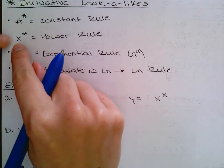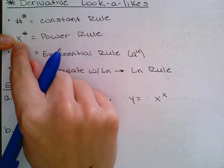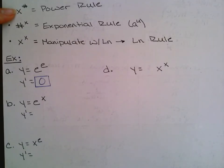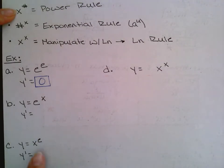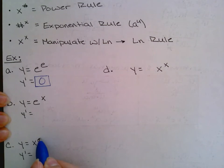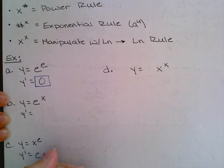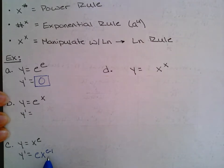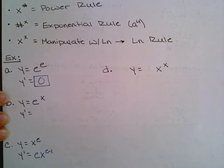Next, x raised to a number is the power rule. The lookalike here is x raised to e — a function raised to a number — which is also power rule. Remember that e is just a number. So pretend this is like x squared: you multiply the exponent to the front and subtract one from the exponent. That gives you e times x to the e minus 1. I'll leave it as e minus 1 because e is a long decimal and subtracting one would require rounding.